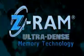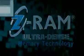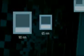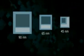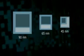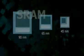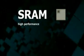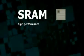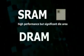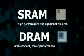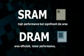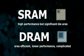Introducing Z-RAM. As process geometries continue to shrink, at every generation more die area is taken up by embedded memory. Embedded memory is generally either SRAM, which has high performance but takes significant die area, or DRAM, which is more area efficient but has lower performance and is more complicated to manufacture.